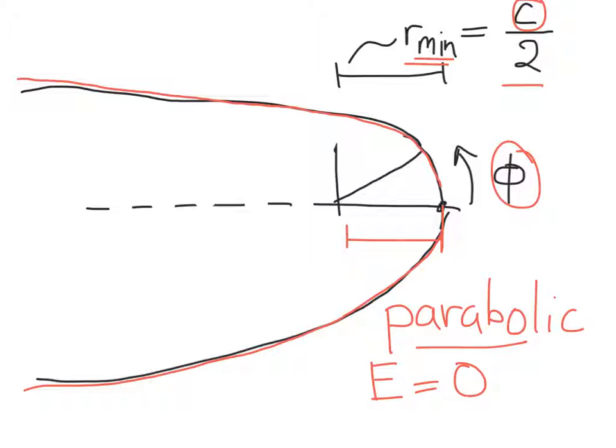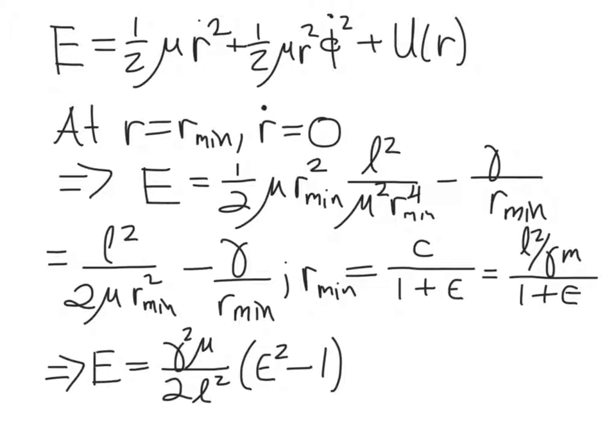So let's see how the energy is related to the geometric parameters epsilon and c for our orbit. Recall from earlier sections that the total energy of the orbit, we can cast it in terms of radial motion r dot, phi motion phi dot, and then the potential energy.